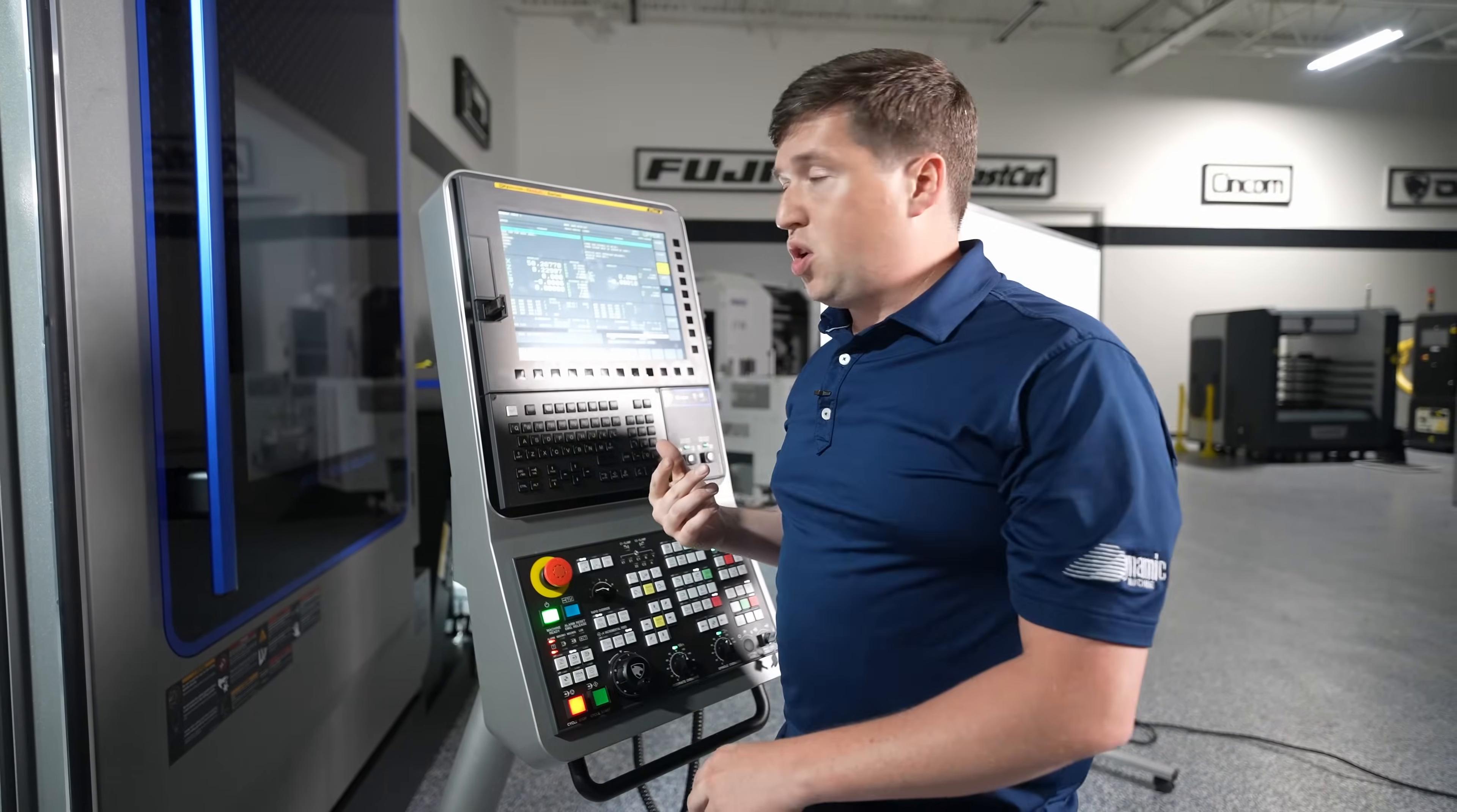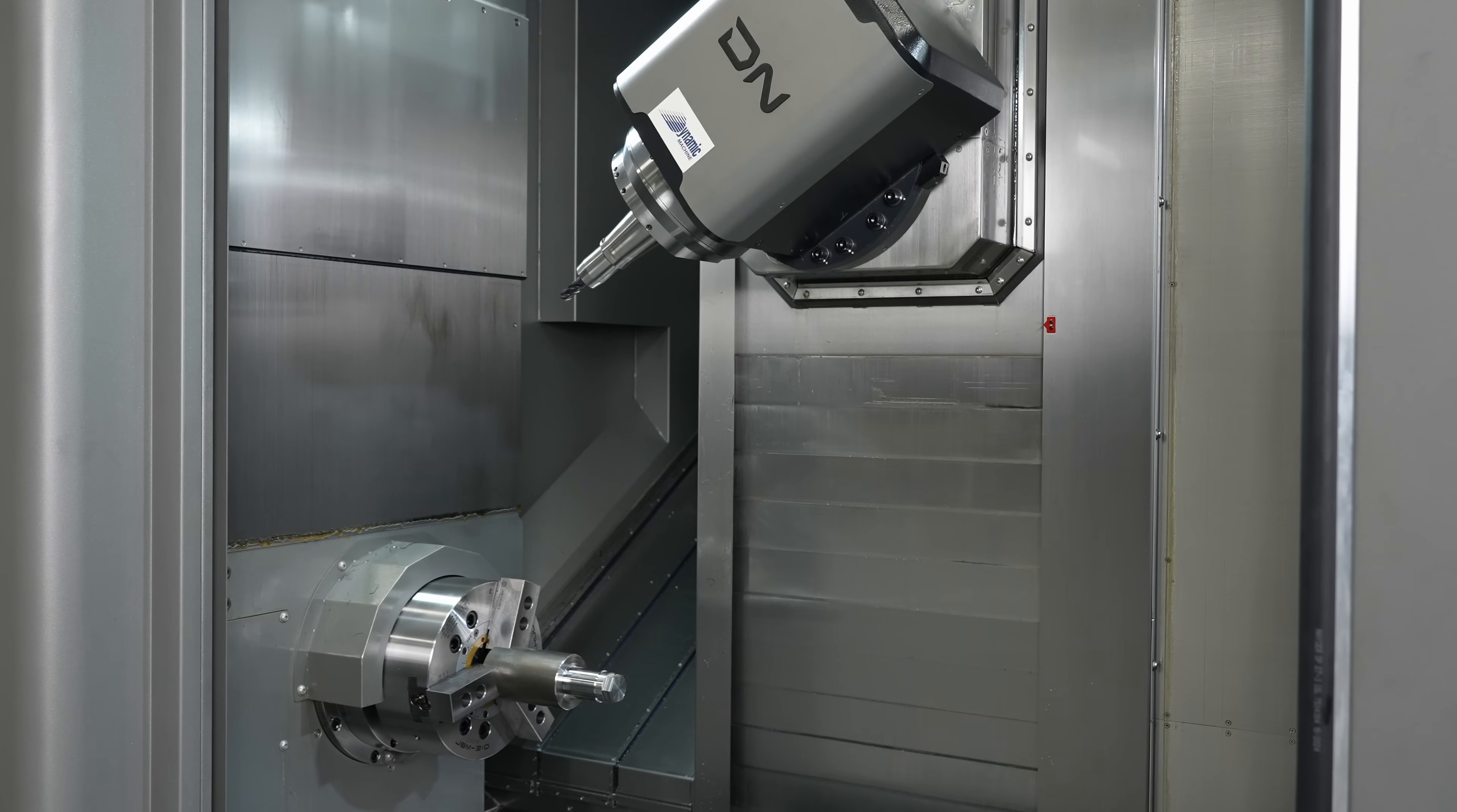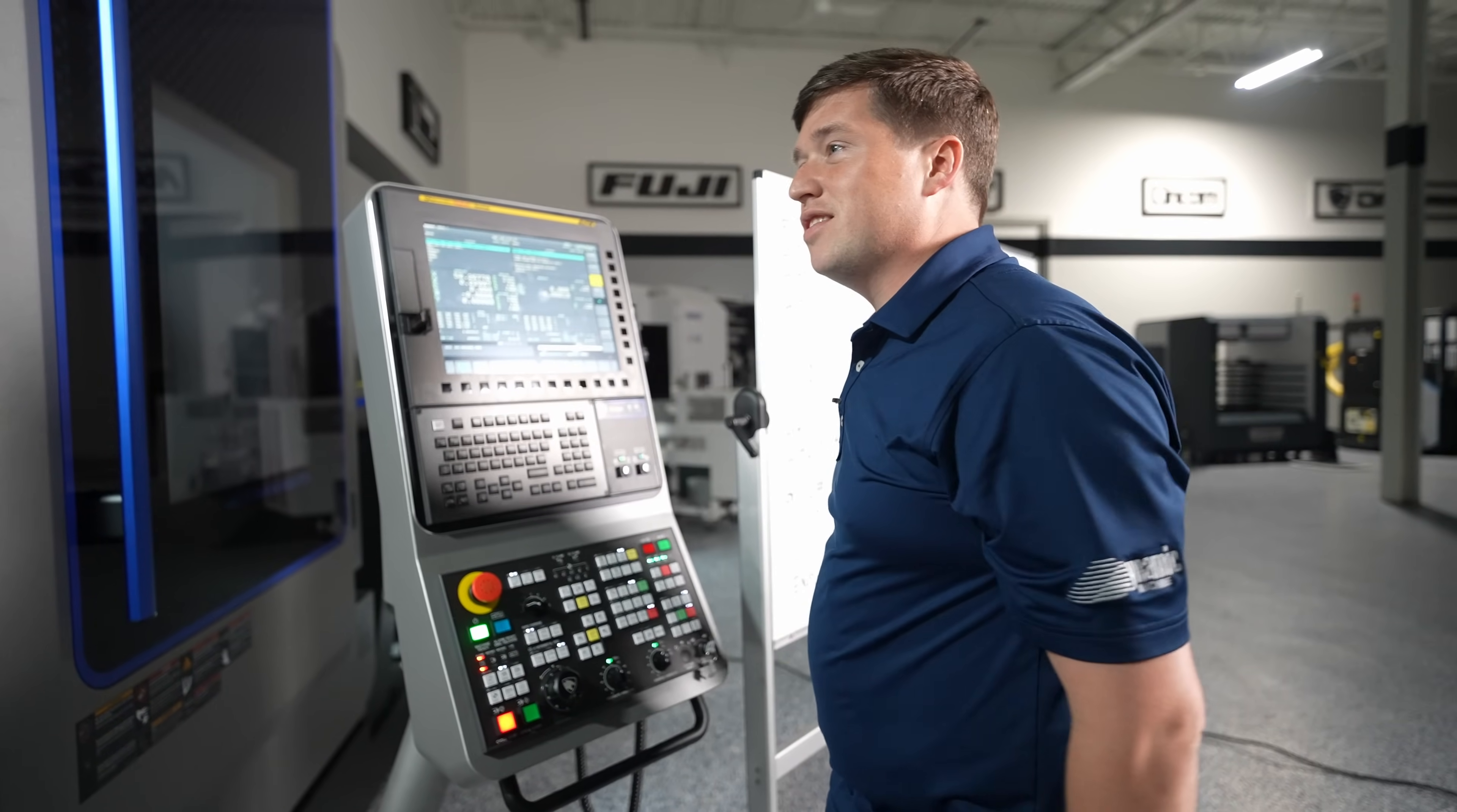The first thing you're going to see at the top of your program are just safety moves. I try to make every program that I give you guys something that no matter what you're doing you can hit cycle start and it'll put you to a safe position. Just jog everything to a clear spot. The first thing it's going to do is go home in x then go home in z and in this case go home in b and then all that fun stuff. So let's press start. Oh the air pressure is down. I turned it down so you could hear me talk. I'll be right back.